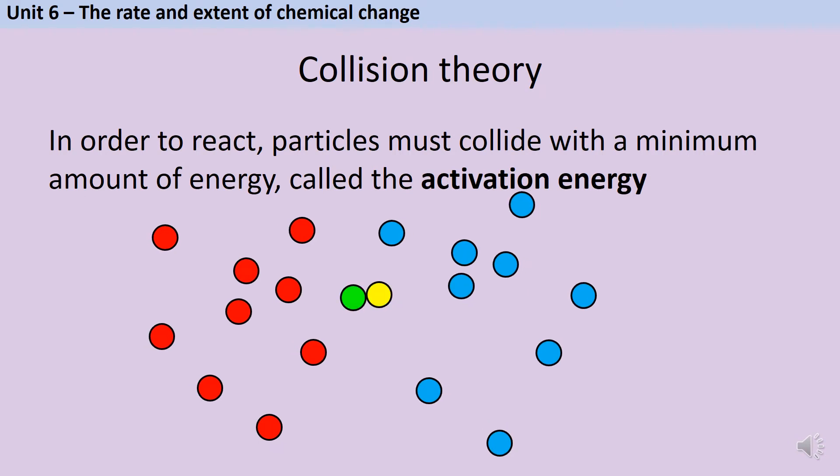In order to speed up the rate of reaction, we either need to increase the number of collisions that are happening each second, or the proportion of particles that have that minimum amount of energy that we call the activation energy. This means that when they collide, they'll actually react. Although there are five different ways of increasing the rate of reaction, increasing the temperature is the only one that affects both of these.